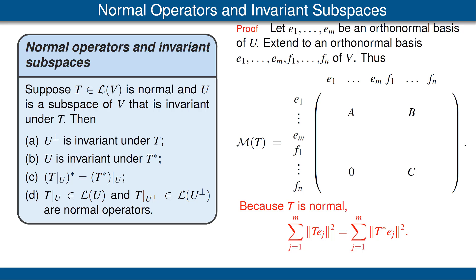Thus, on the left side of this equation we have the sum of the squares of all the entries in A, and on the right side we have the sum of the squares of all entries in A and in B. This implies that B is the matrix of all zeros. So B, now shown in red in the upper right corner, we replace with zero. The form of the matrix now implies that each of the F's gets mapped by T into some linear combination of the F's — that's precisely what it means for the orthogonal complement of U to be invariant under T. In other words, we have proved part A. That was the hard part of this proof. Please read the proofs of parts B, C, and D in the book.